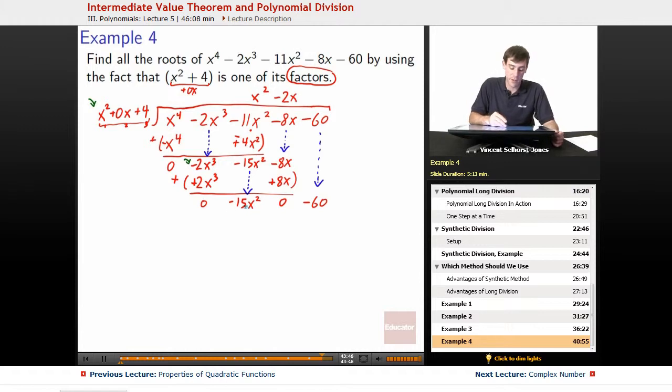x squared plus 0x plus 4. How many times does that fit into negative 15x squared minus 60? Once again, we just look at the first part. Negative 15x squared divided by x squared becomes just minus 15. So negative 15x squared. Multiplying it out. 4 times negative 15 minus 60.